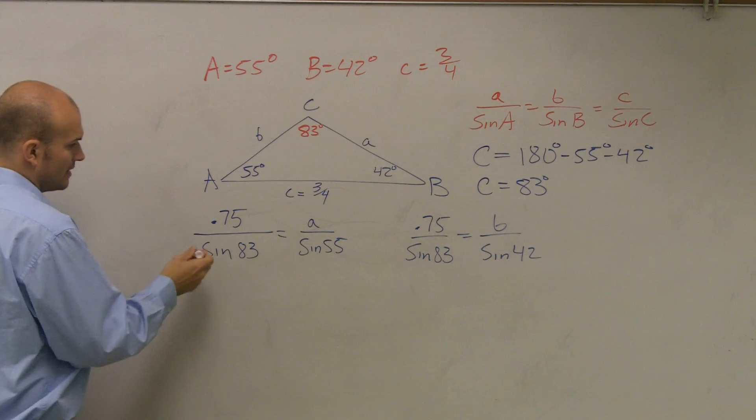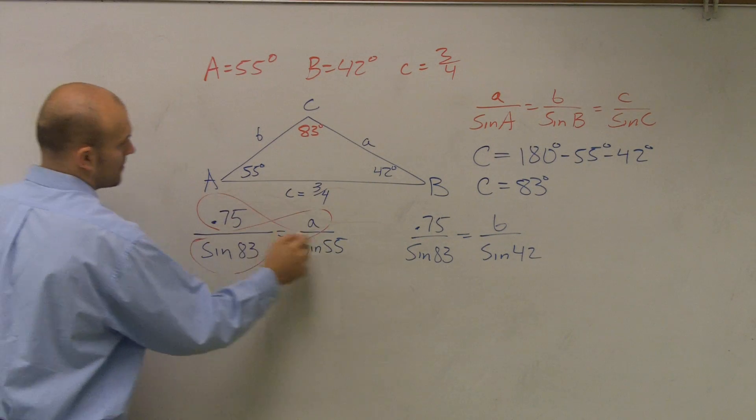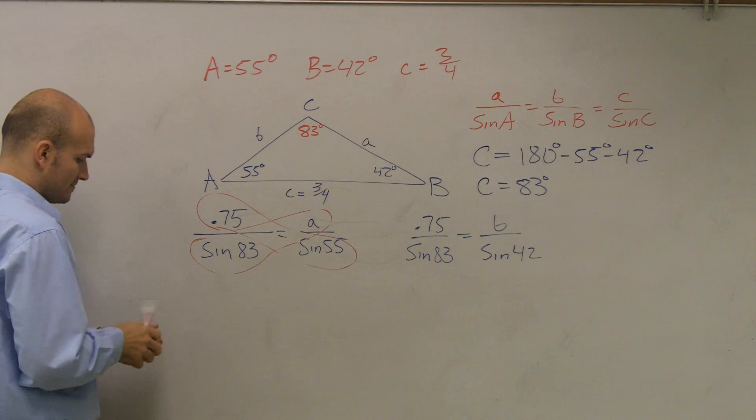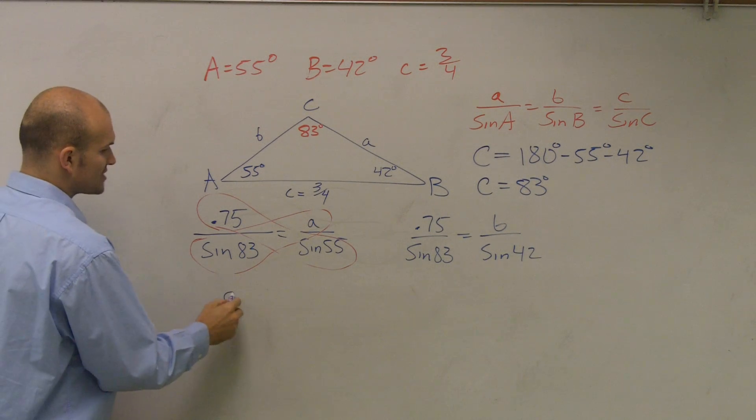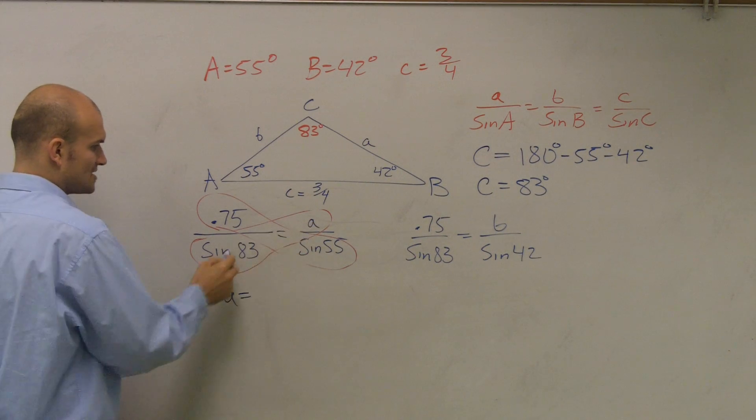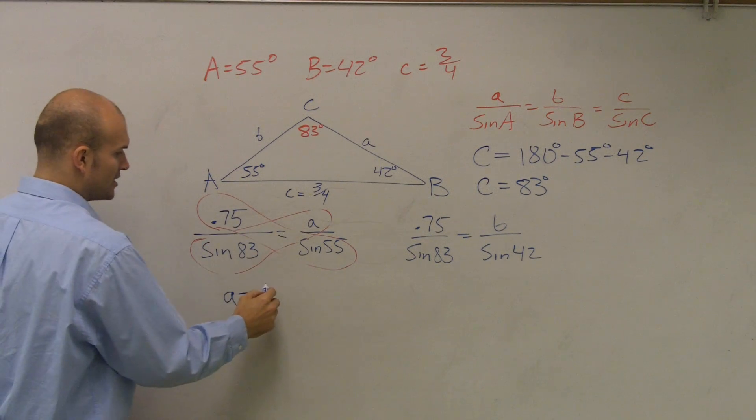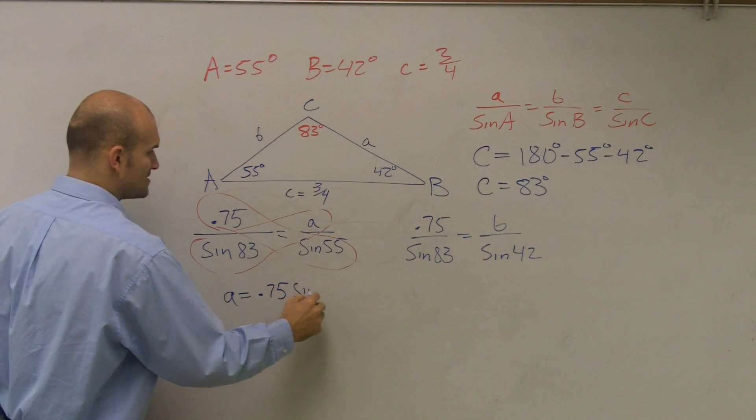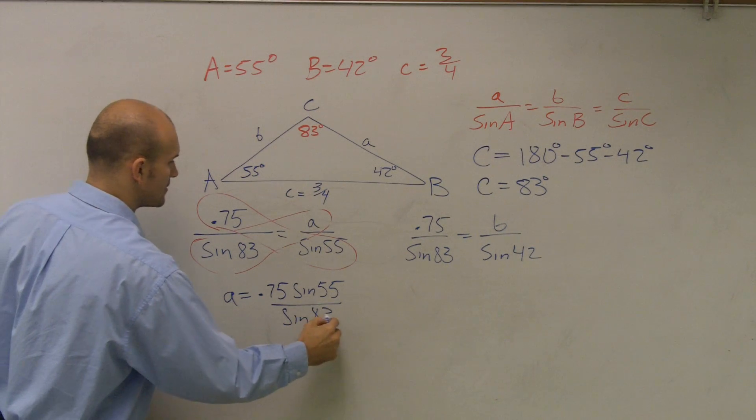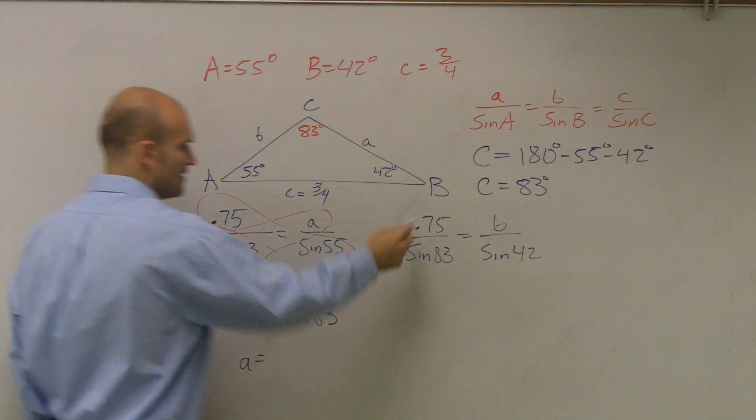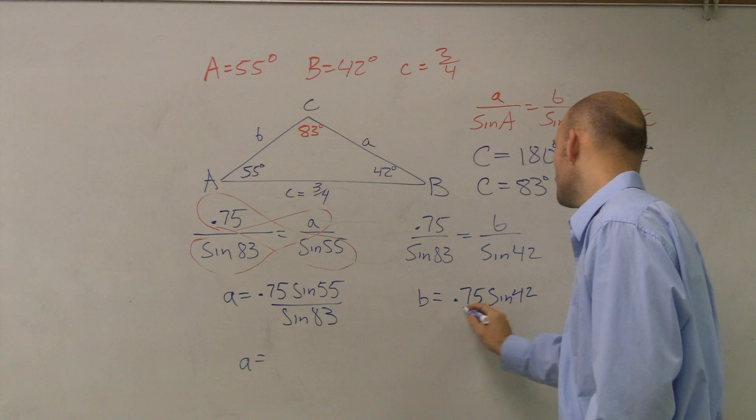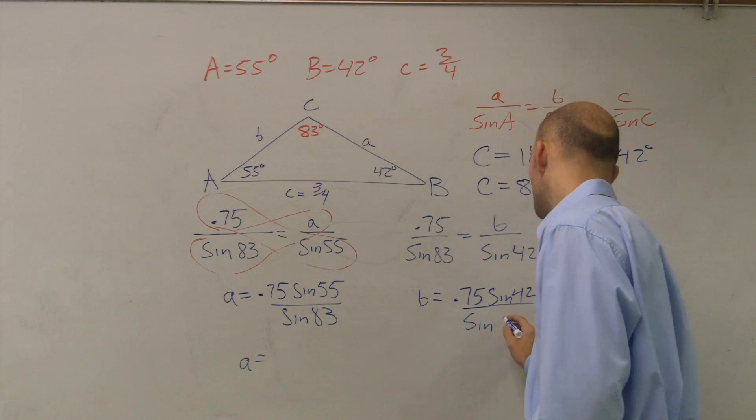So the next thing to remember is cross-multiply. So when I cross-multiply and then isolate my variable, I'm going to skip a couple steps. So cross-multiply, I'll get A equals these two multiply by each other, so 0.75 times sine of 55. And then when I have to isolate this variable A, I'm going to have to divide by sine of 83. So A equals, and then this one, when I solve for B, I'll have 0.75 times sine of 42 divided by sine of 83.